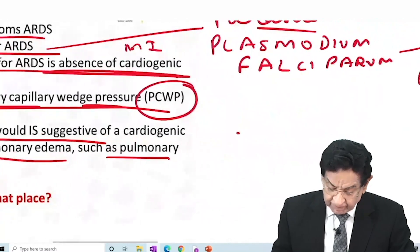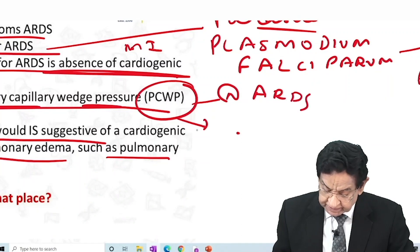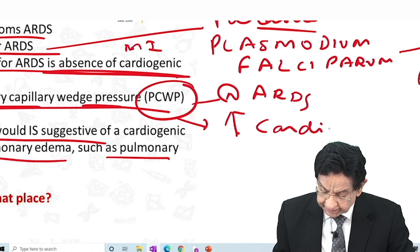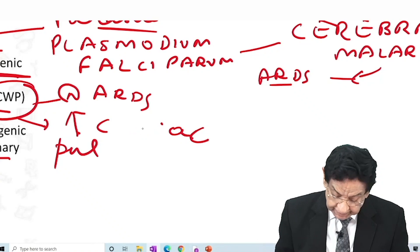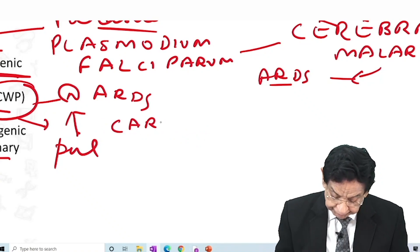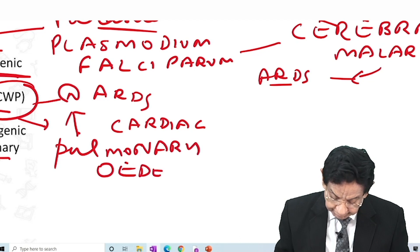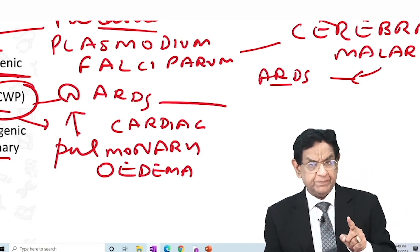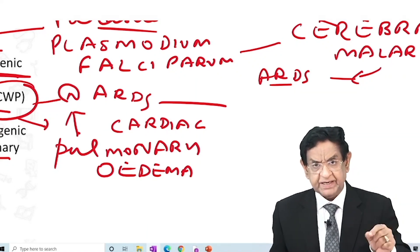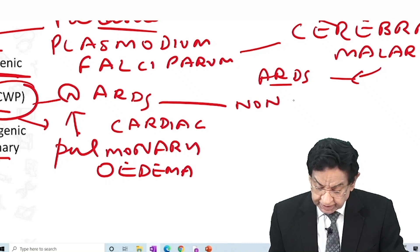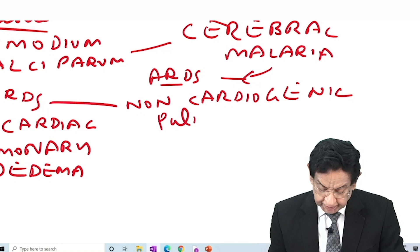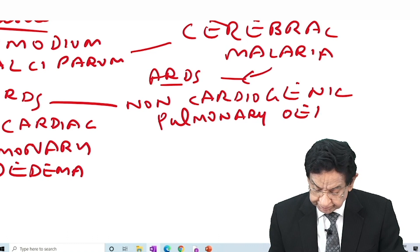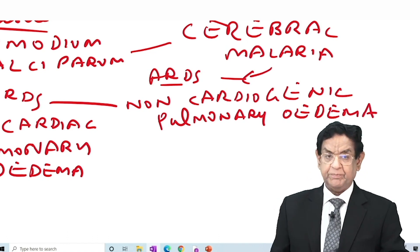To summarize: pulmonary capillary wedge pressure is normal in ARDS and is increased in cardiac pulmonary edema. Because PCWP is normal in ARDS, the other name for ARDS is non-cardiogenic pulmonary edema. Very, very important point — cannot forget this.